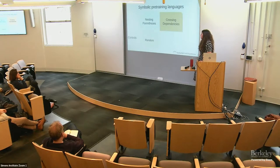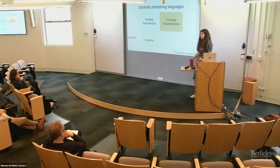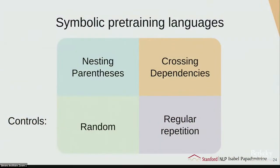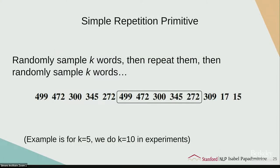We also have two control languages. First, a random language: the same vocabulary of 500 tokens, but sampled totally without structure. Second, a regular language — much simpler to produce than nesting parentheses, probably sub-regular. It's similar to the random language, but you sample K words and repeat them, then sample K words again and repeat. There's some very minimal simple structure, but in a finite and uncomplicated way. We want to control for this to see if any kind of structure has an effect.